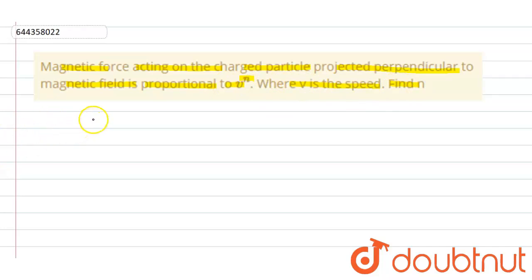So this question is based on the chapter magnetic. We know when a charged particle is projected with some velocity v at some angle theta with the magnetic field,